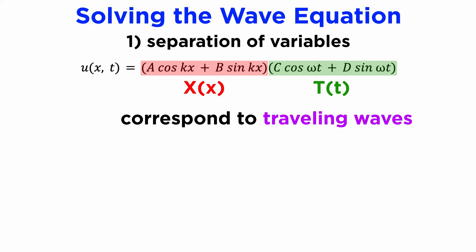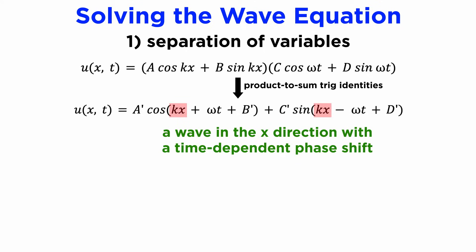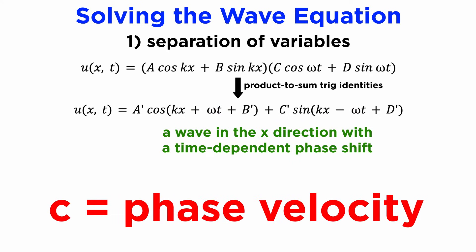When multiplied together, the functions x and t correspond to traveling waves, which we can more easily see by using the product-to-sum trig identities. We can now interpret our solution as a wave in the x direction that has a time-dependent phase shift, always propagating through space at that fixed speed of c, which we will now call the phase velocity of the wave.